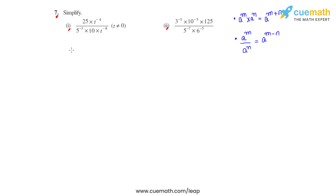Now let's start solving bit 1. Here we see that we have 25 times t raised to negative 4. Now as we know that 25 is a square of 5, we can write it as 5 raised to 2 times t raised to negative 4, divided by 5 raised to negative 3 times 10.